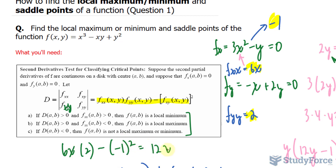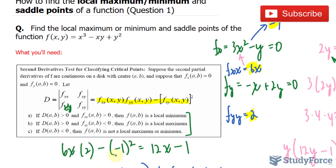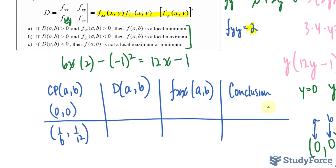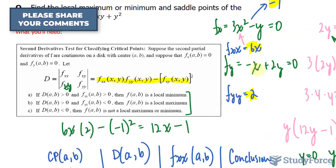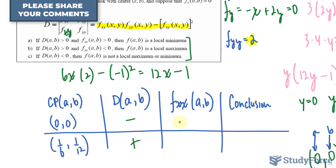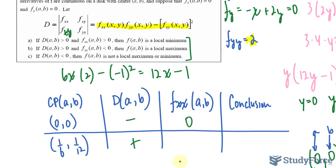We evaluate D = 12x - 1 at both critical points. At (0, 0): D = 12(0) - 1 = -1, which is negative. At (1/6, 1/12): D = 12(1/6) - 1 = 2 - 1 = 1, which is positive. Now substituting into f_xx = 6x: at (0, 0), f_xx = 0; at (1/6, 1/12), f_xx = 6(1/6) = 1, which is greater than 0.